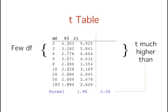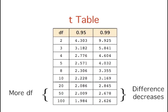Notice that with only a few degrees of freedom, the values of t are much higher than the corresponding values for a normal distribution. Also notice that as the degrees of freedom increase, the differences between the corresponding values for the t-distribution and the normal distribution decrease.